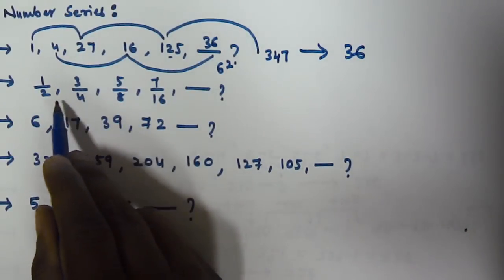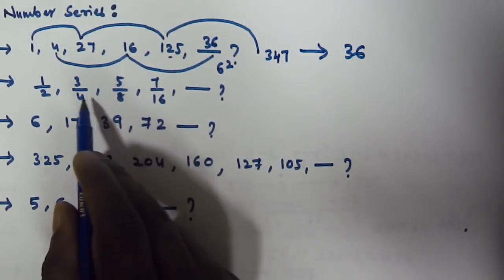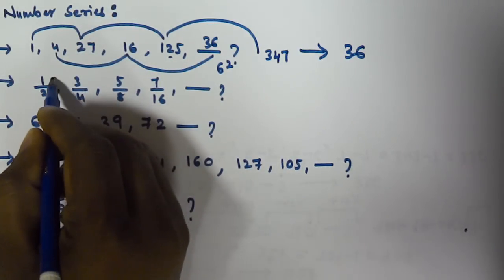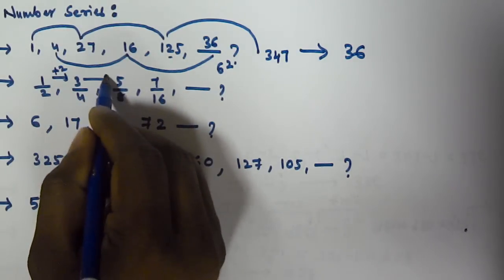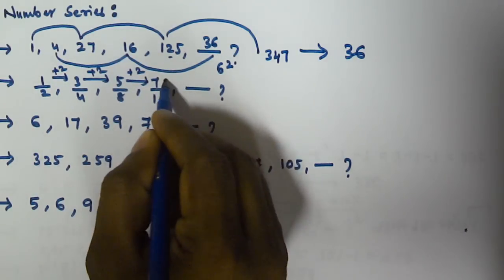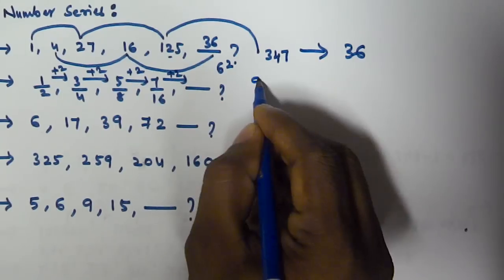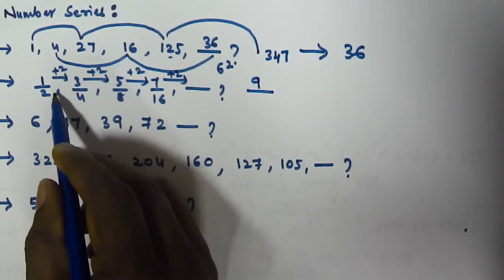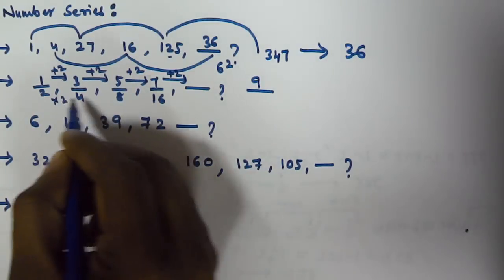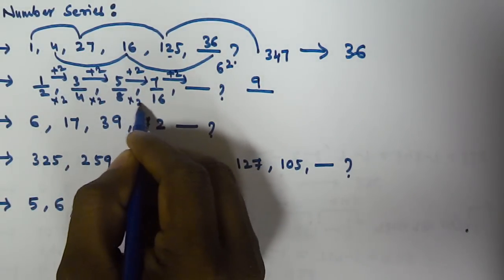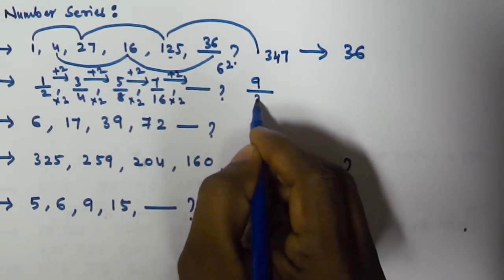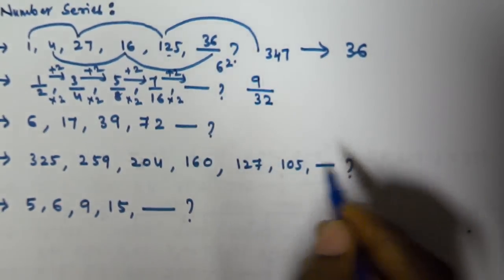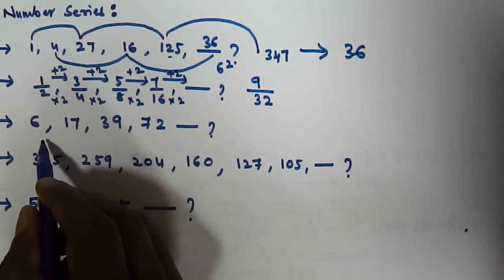Now for the fraction series, if you observe the numerators: 1, 3, 5, 7 — we are adding plus 2 each time. So the next numerator will be 7 plus 2 equals 9. For the denominators: 2 times 2 is 4, 4 times 2 is 8, 8 times 2 is 16, and 16 times 2 is 32. So the next term is 9/32.